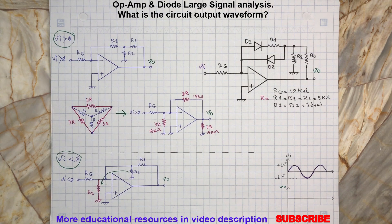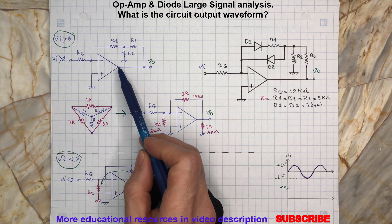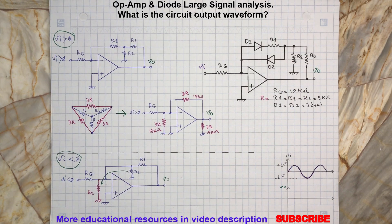This negative output will also put the diode D2 into reverse bias. Therefore, we will have the following simplified circuit. As you can see here, the op-amp feedback network is simplified to a resistance network with a star configuration containing R1, R2, and R3.